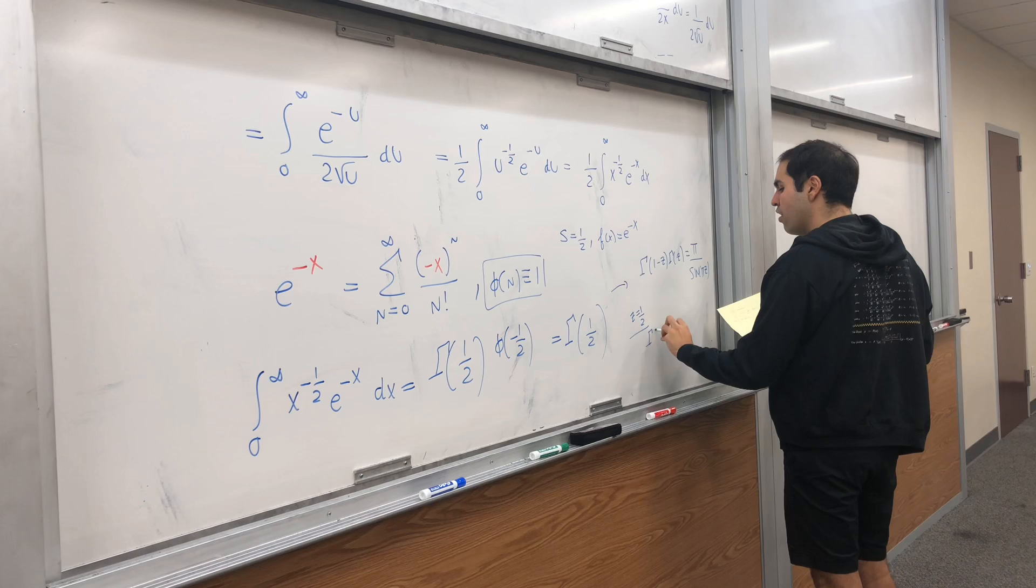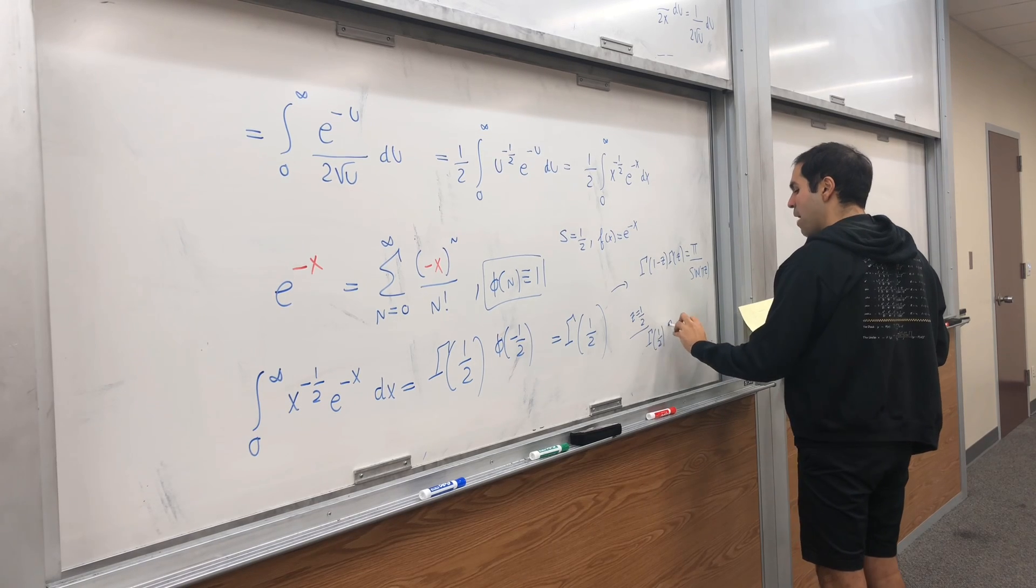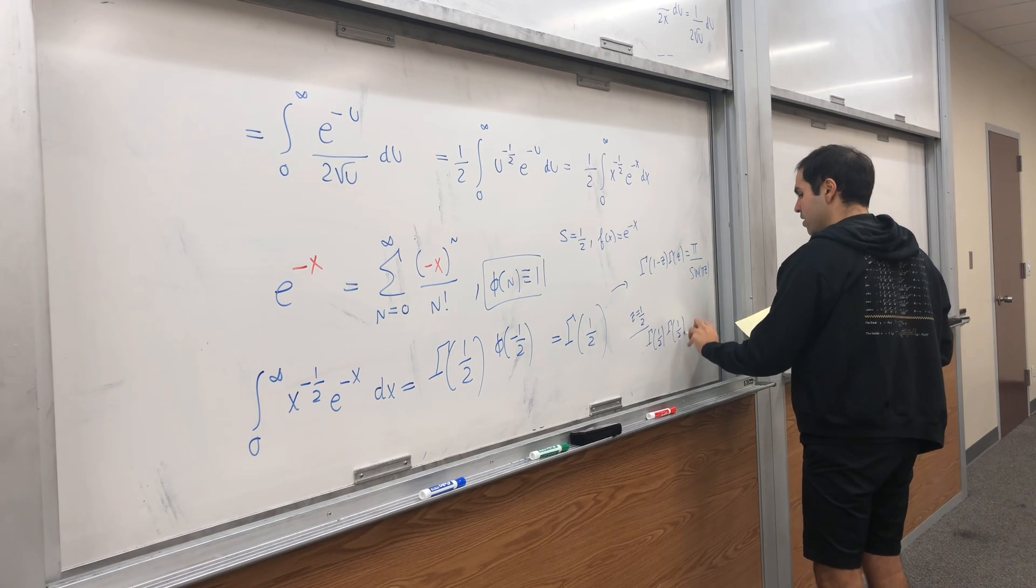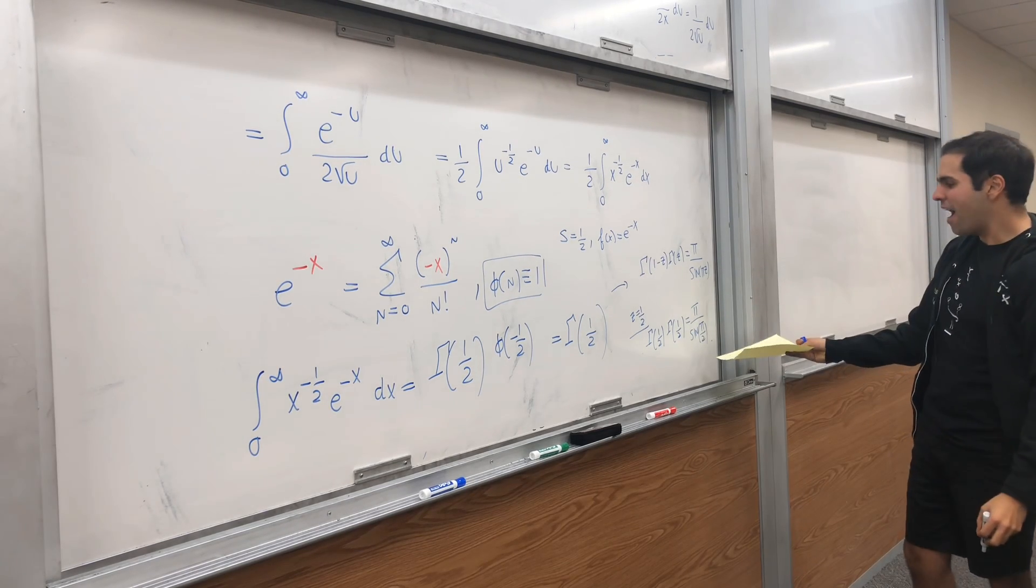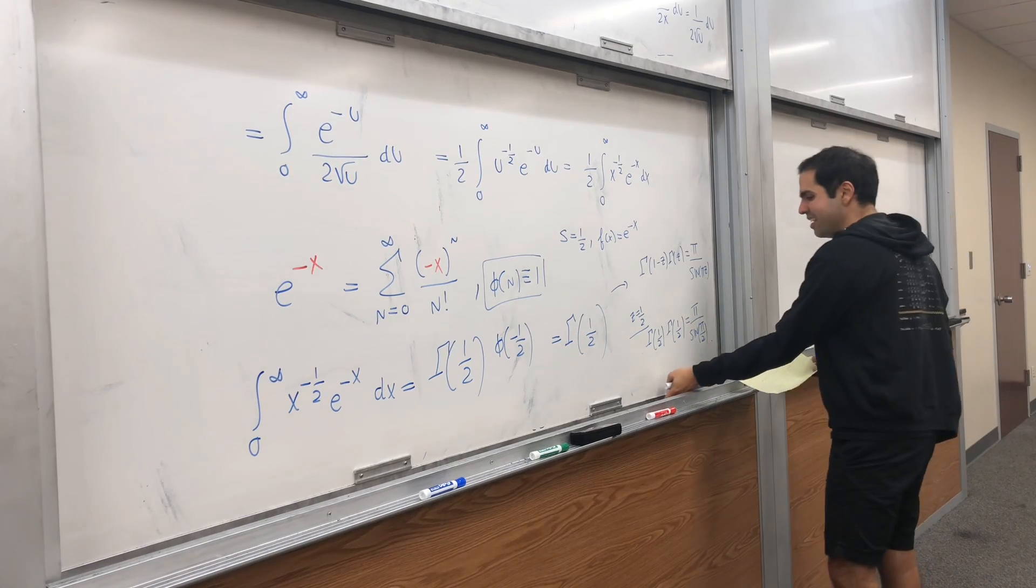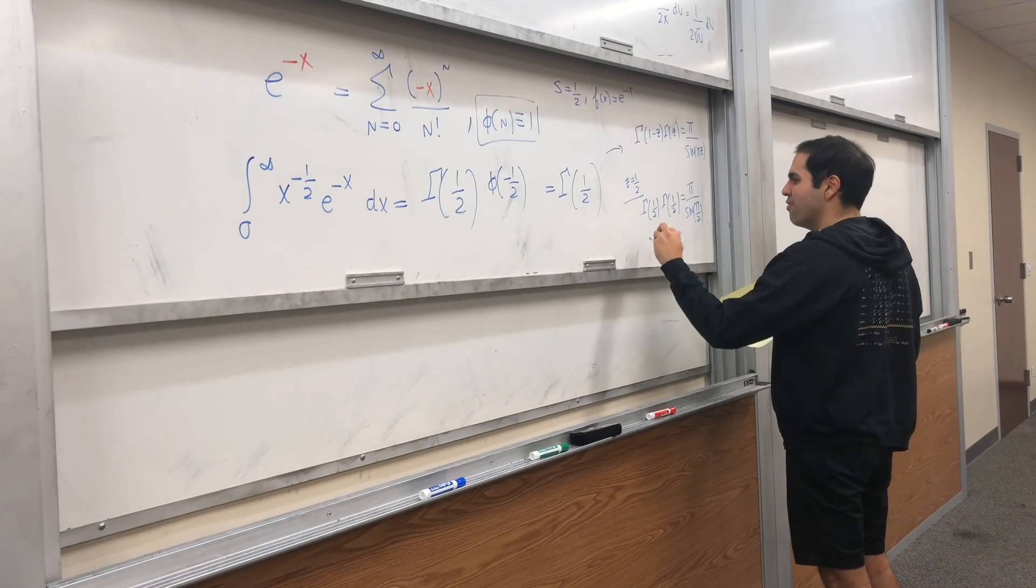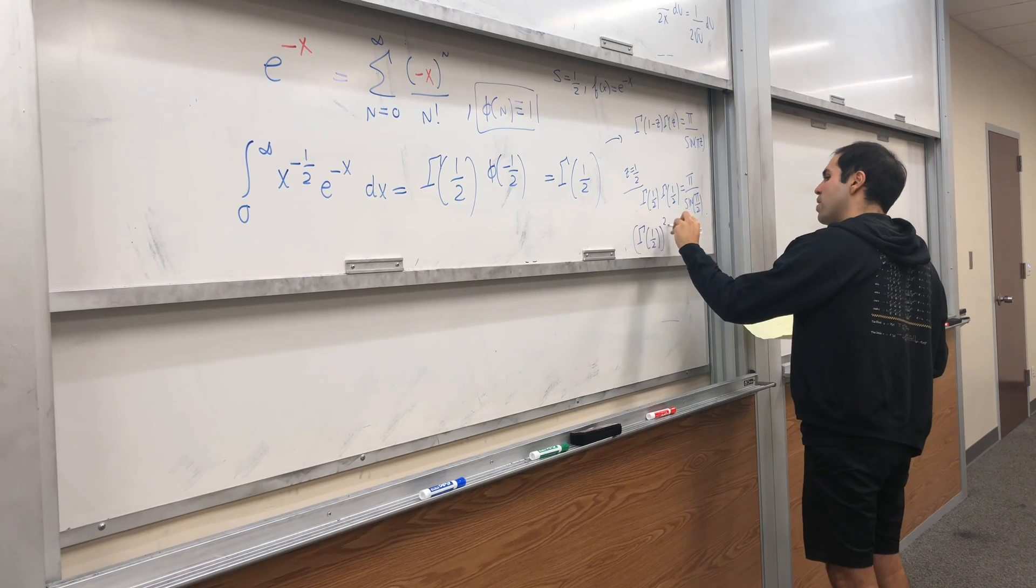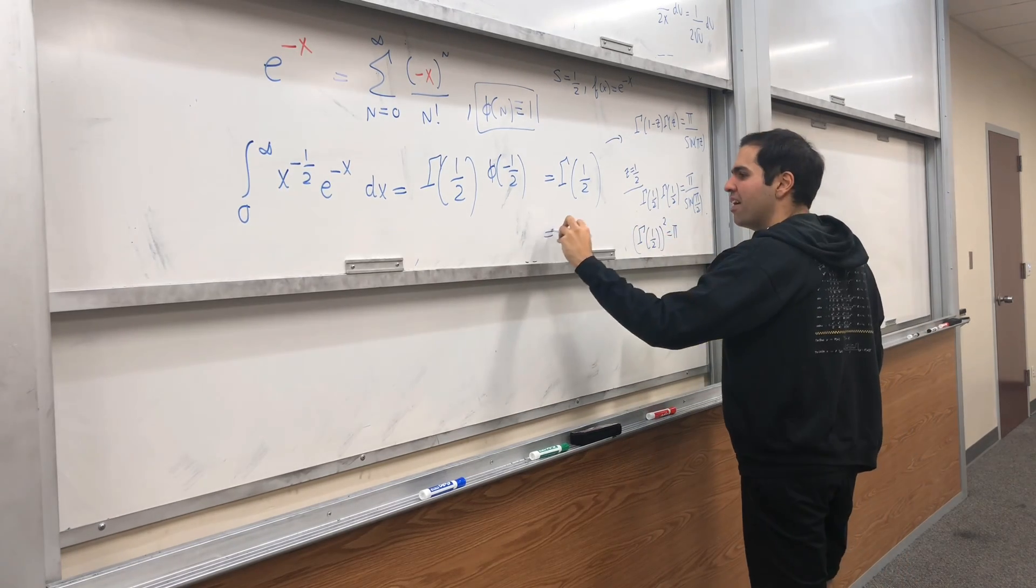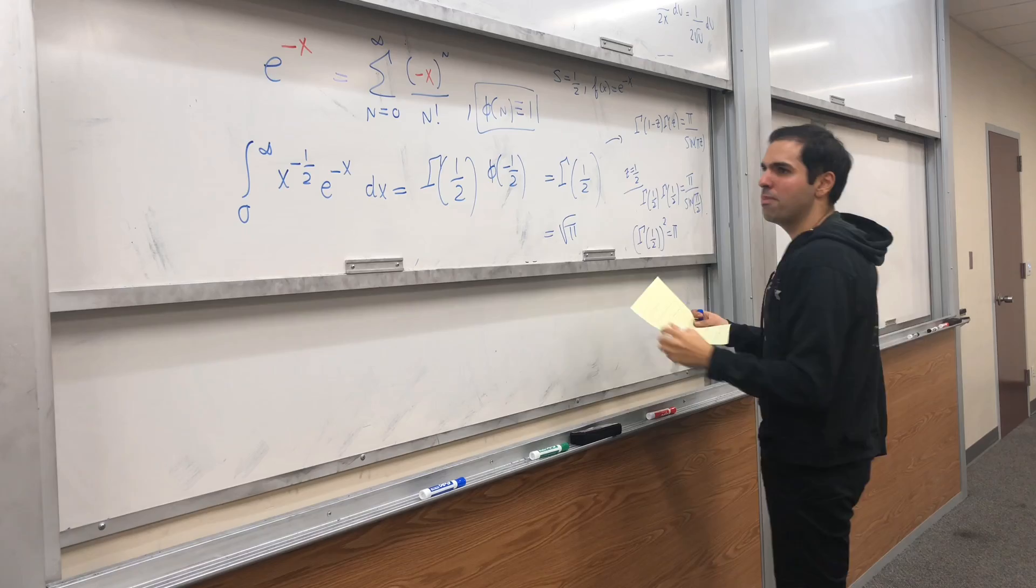Then you get gamma of one half times gamma of one half equals pi over sine of pi over 2. But sine of pi over 2 is just 1, so we get gamma of one half squared equals pi. Therefore gamma of one half is square root of pi.